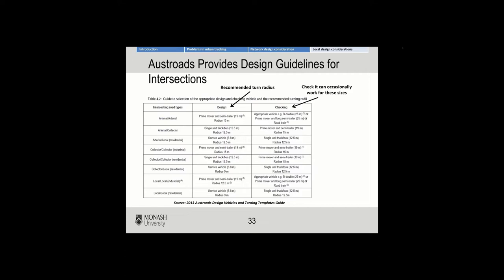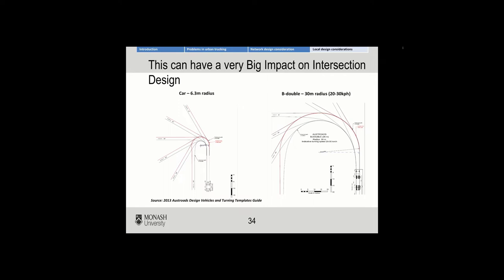Austroads does provide design guidelines for intersections with respect to truck design. I suggest you look through the table on this slide or the Austroads guide itself in your own time — it could assist you for project one. One important consideration, which we'll look at more in the activity, is the turning circle for trucks as opposed to cars. A car requires a 6.3 metre radius, whilst a B-double requires a 30 metre radius at 20 to 30 kilometres per hour.